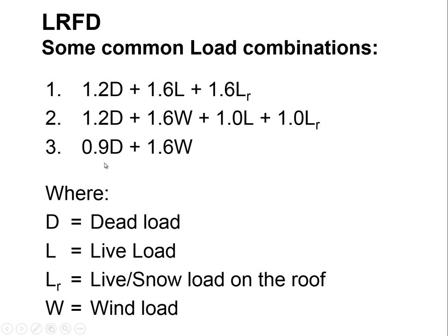A third interesting load combination is 0.9D + 1.6W. This deals with the fact that wind can actually lift a building, roll it over, or lift one side off its foundation. We account for the full wind load, while recognizing that the dead load acts as ballast keeping the building in place. To be conservative, we lower the estimated dead load — assuming the ballast is only 90% of what we calculate — while applying a 1.6 factor on wind.